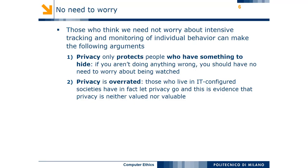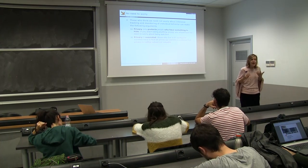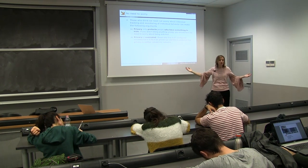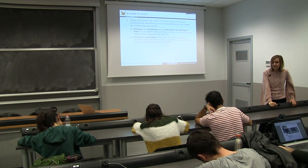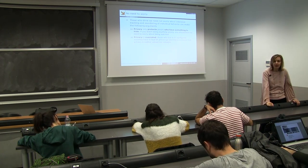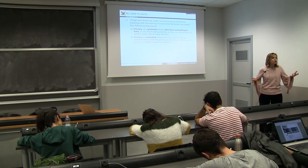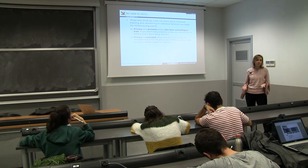The second group of arguments is that privacy is overrated — we consider privacy too important. A proof of this is that we are already living in societies where we have renounced much of our privacy and still we are living well, or some say even better than in the past. This is a very dangerous argument.